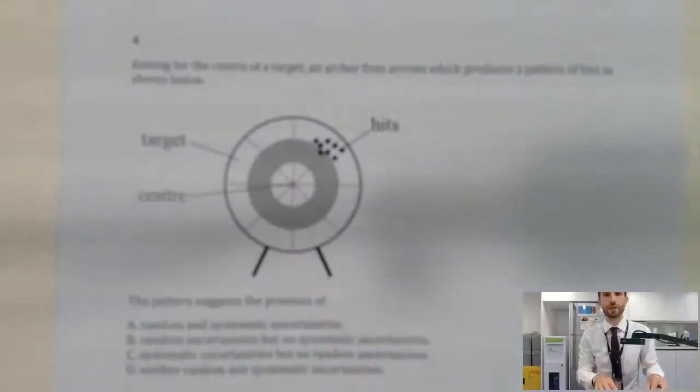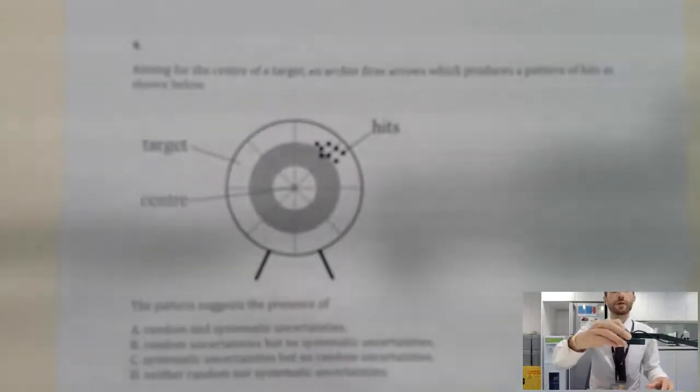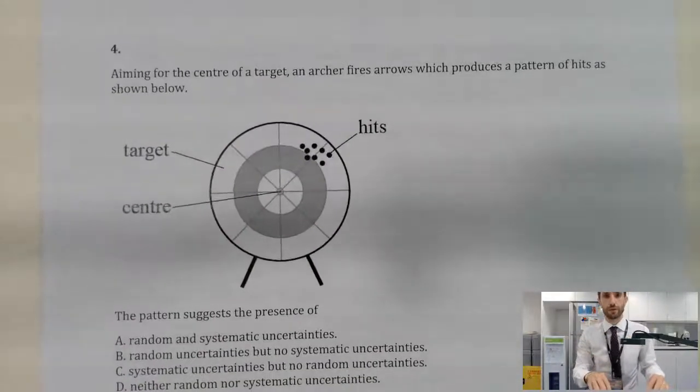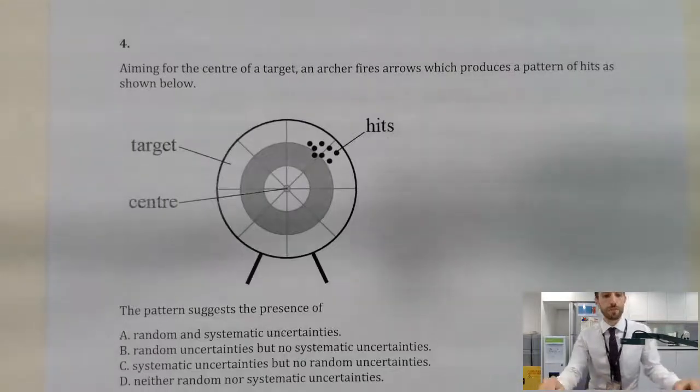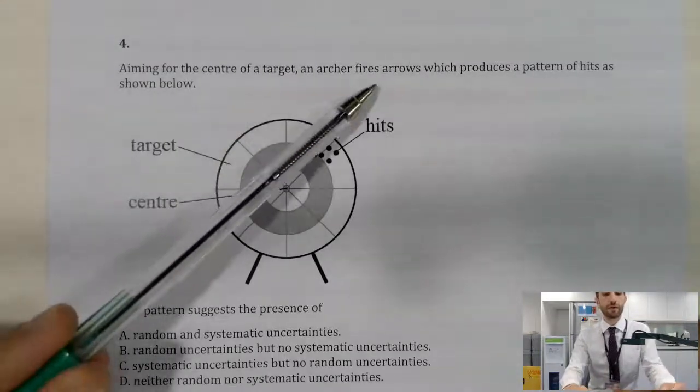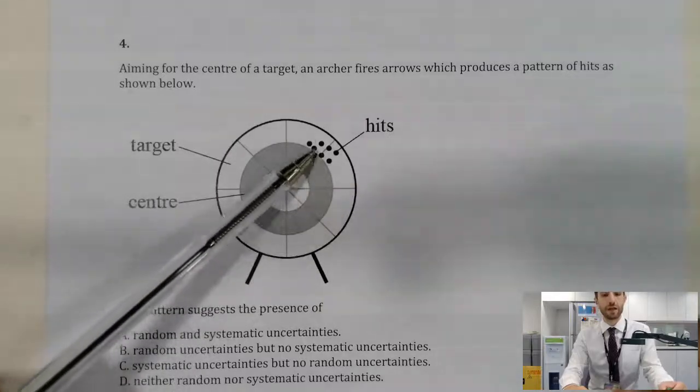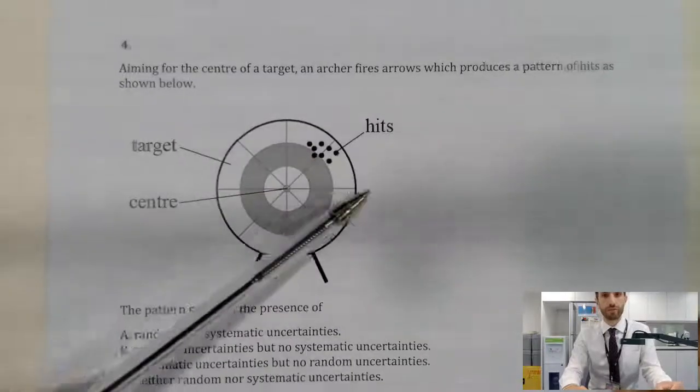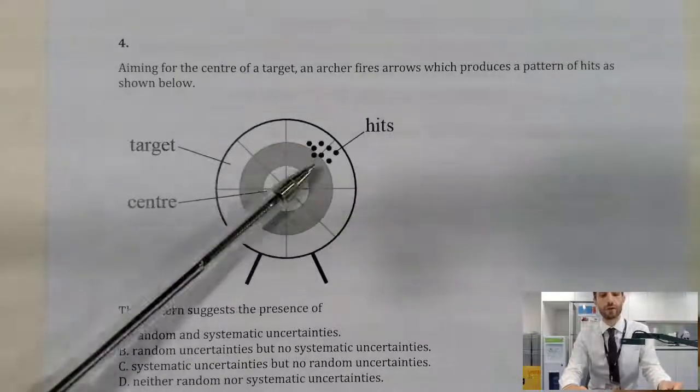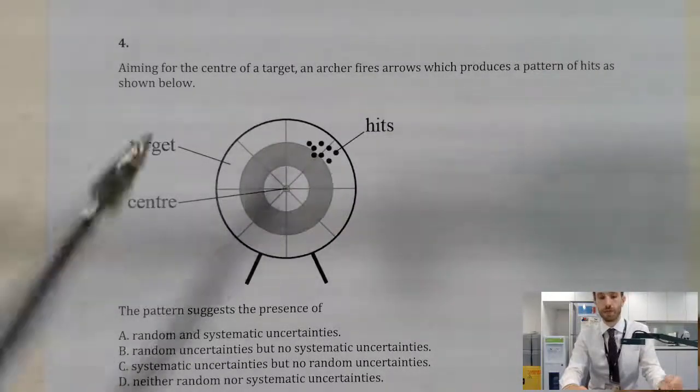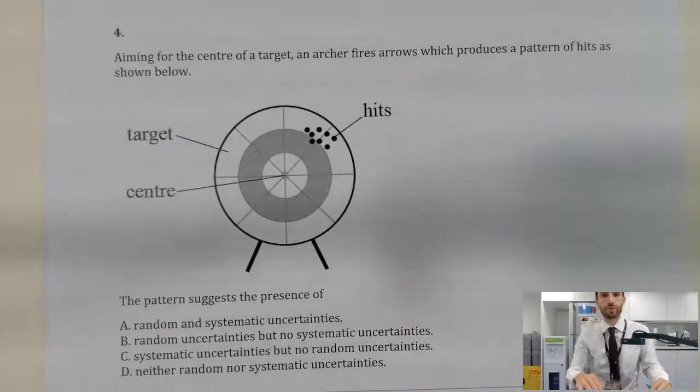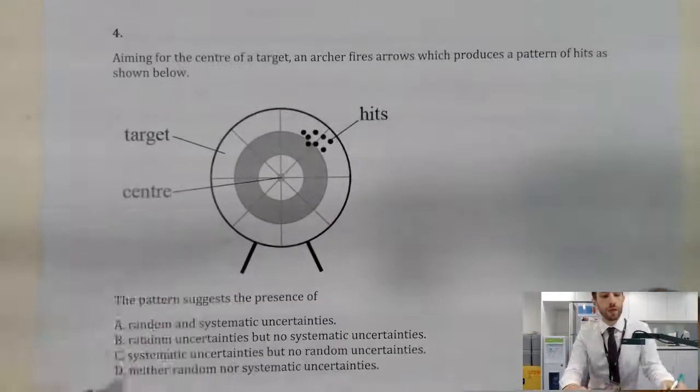Question number four. A bit of a tricky one, this one, because it really depends, because there's very little way of defining this. Hopefully that makes it a bit clearer for you guys. We've got an archer, and he's firing arrows which produce a pattern of hits. Now you're noticing these hits are quite close together. They are quite close together. However, they are not all on the same spot. And that's the key to answering this question, where a lot of people get this one wrong.